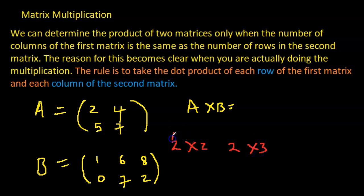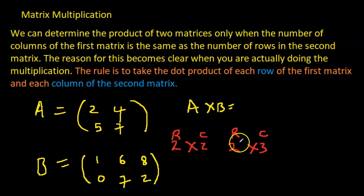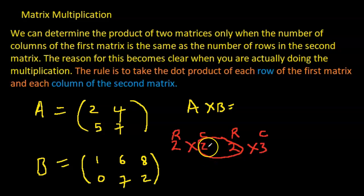Remember: rows then columns. So reading the rule again — we can determine the product of two matrices only when the number of columns of the first matrix equals the number of rows in the second matrix. Here the first matrix has 2 columns, and the second has 2 rows — so these numbers are the same, and we can multiply. If they are not the same, we cannot multiply.